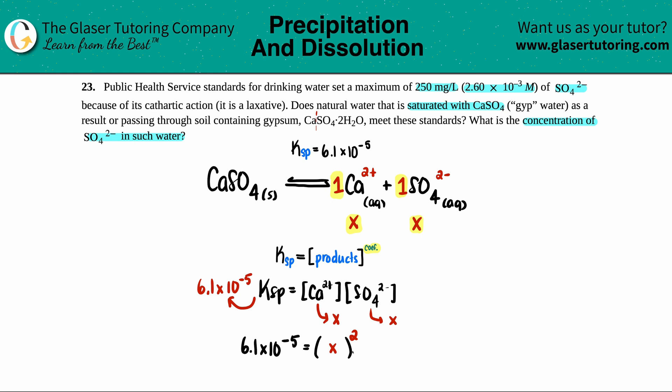So all we would have to do, if I just get rid of this, pull this a little bit closer, all we would have to do is just take the square root on both sides. And we get x equals. So let's see. Calc is out. Square root, 6.1 times 10 to the negative fifth. I'll put it in scientific notation, 7.81 times 10 to the negative third molarity.